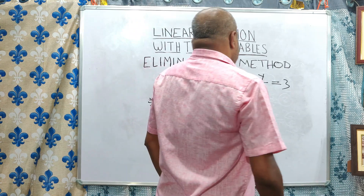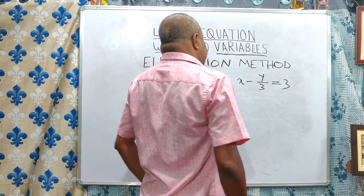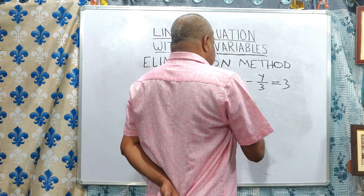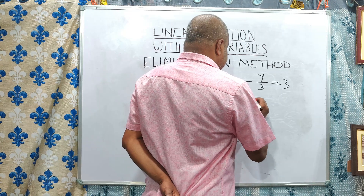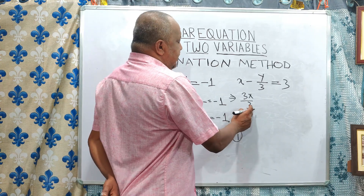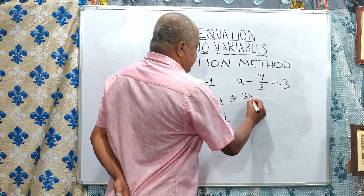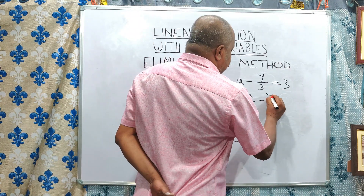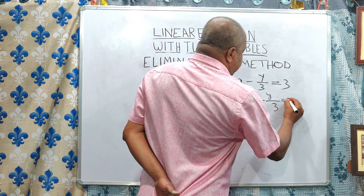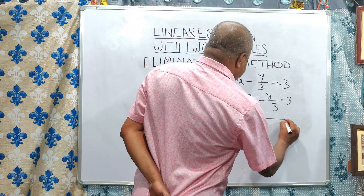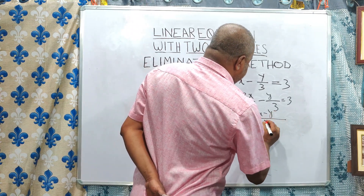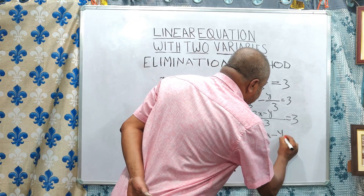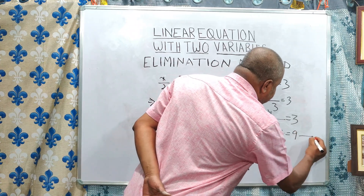Now we will have to modify the second equation. Here x means x by 1, and we take the LCM of 1 and 3, which is 3. So 3 divided by 1 into x is equal to 3x, and 3 divided by 3 is 1, giving y. The equation becomes 3x minus y by 3 is equal to 3, and on cross multiplication, 3x minus y is equal to 9. This is equation number 2. Modification is now completed.